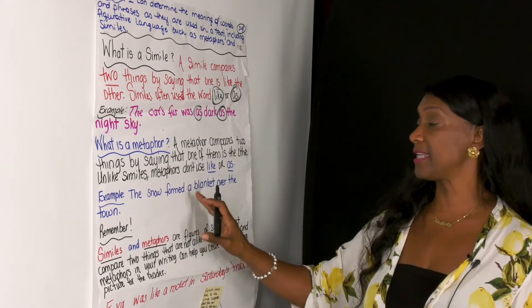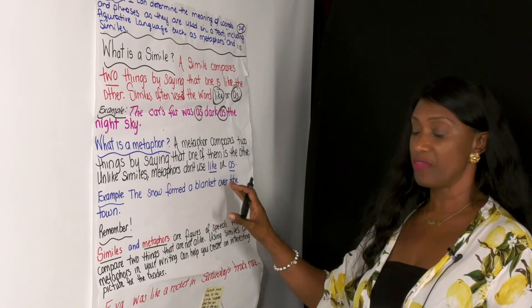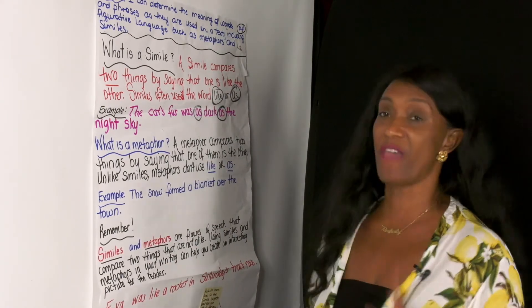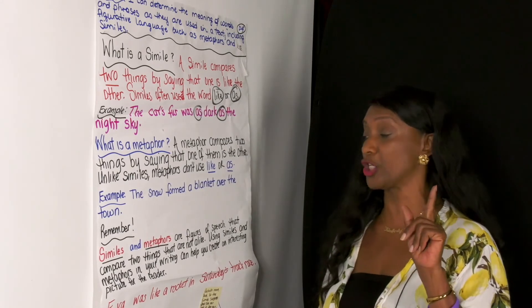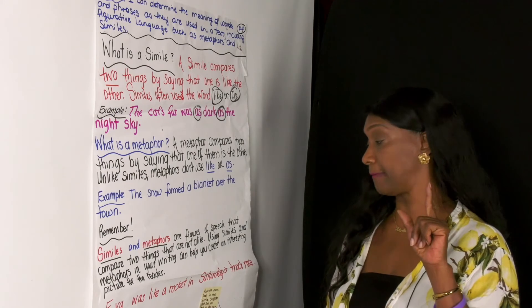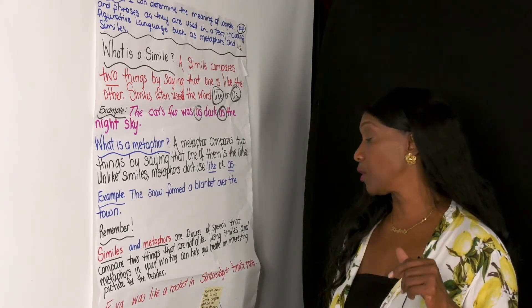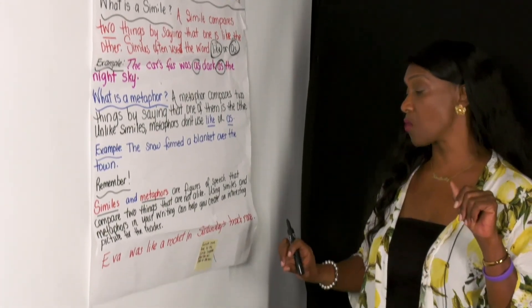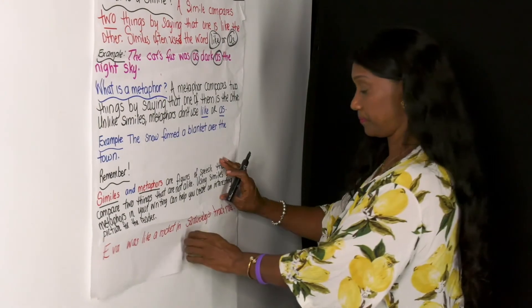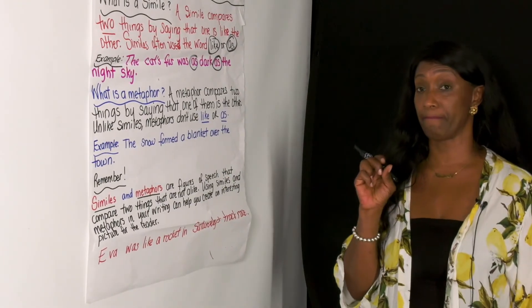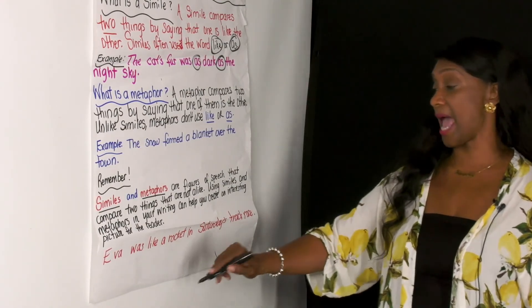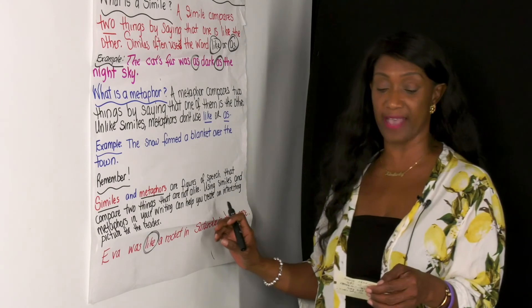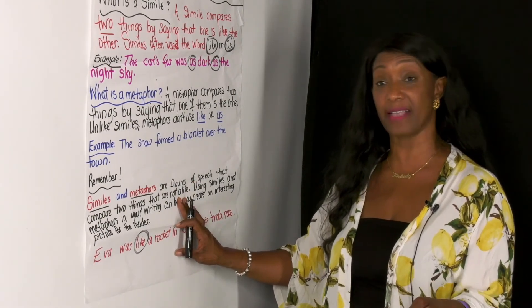The metaphor makes the reader imagine that the snow is a blanket covering the town. Remember, boys and girls — similes and metaphors are figures of speech that compare two things that are not alike. Using similes and metaphors in your writing can help you create an interesting picture for the reader. Here's another example: 'Evil was like a rocket in Saturday's track race.' That's a simile. Rockets move fast, so this simile is suggesting that Evil ran fast in the race.